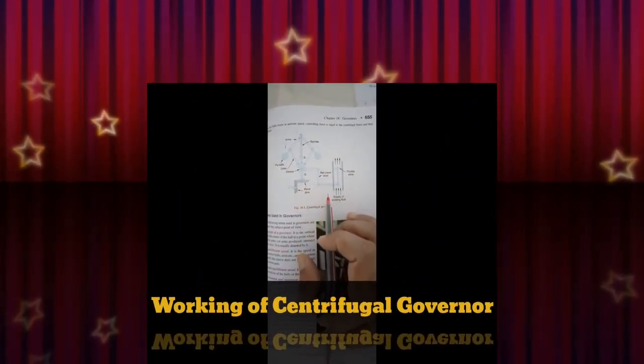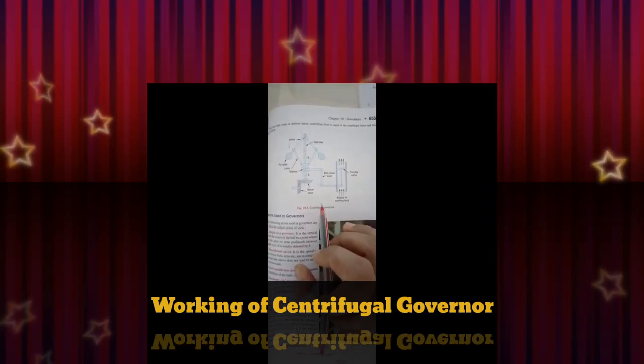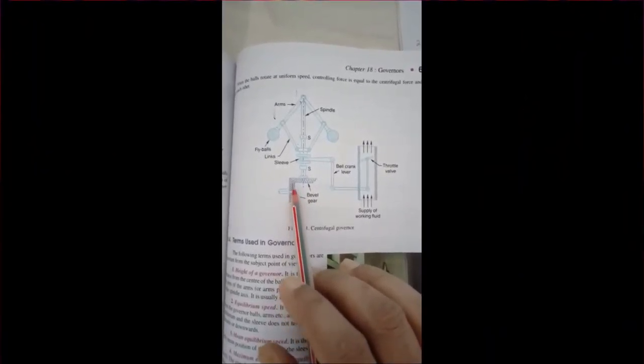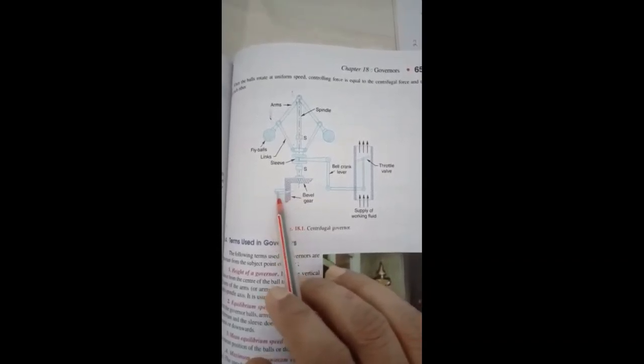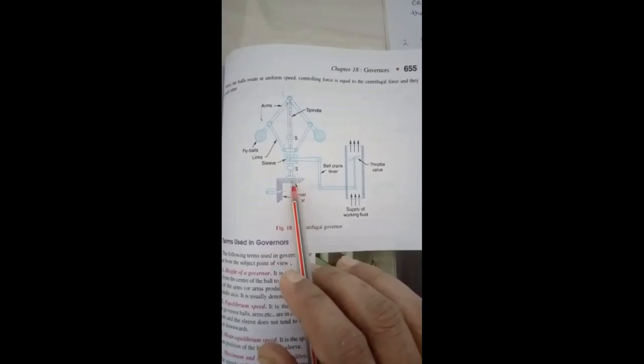This is an outline of a centrifugal governor. Let us come to know how it works. This is a vehicle gear. This gear is mounted on the engine shaft - this is the engine shaft and this is the vehicle gear.